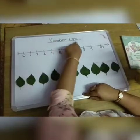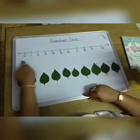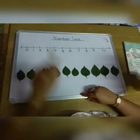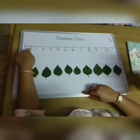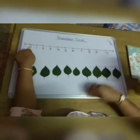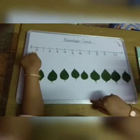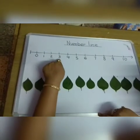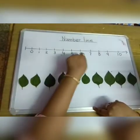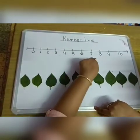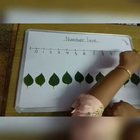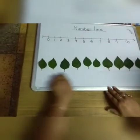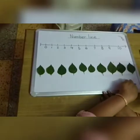See, number line. This is the number line, and I have written from number 0 to 10: 0, 1, 2, 3, 4, 5, 6, 7, 8, 9, 10. And these are my 10 leaves.